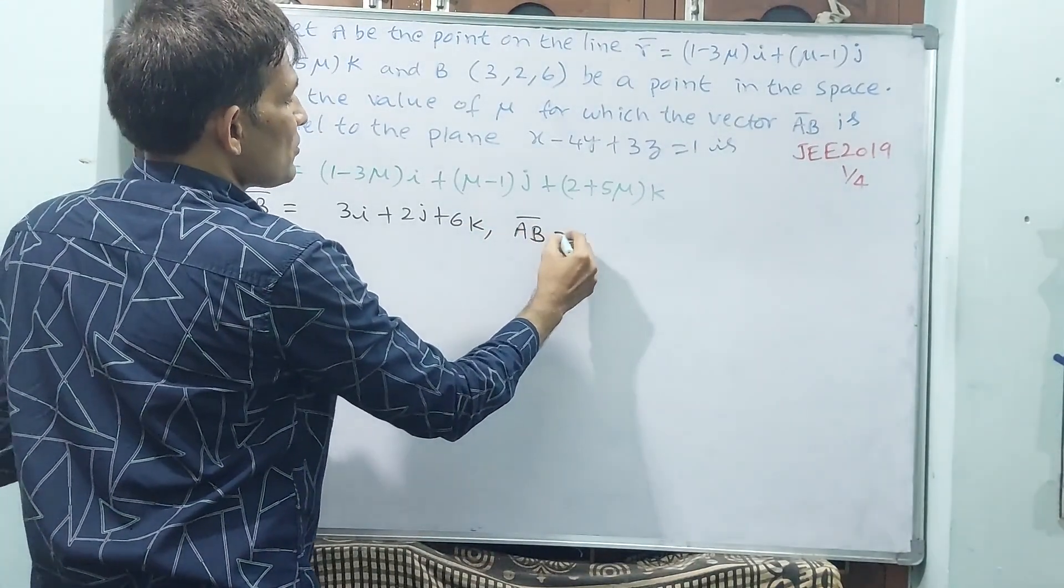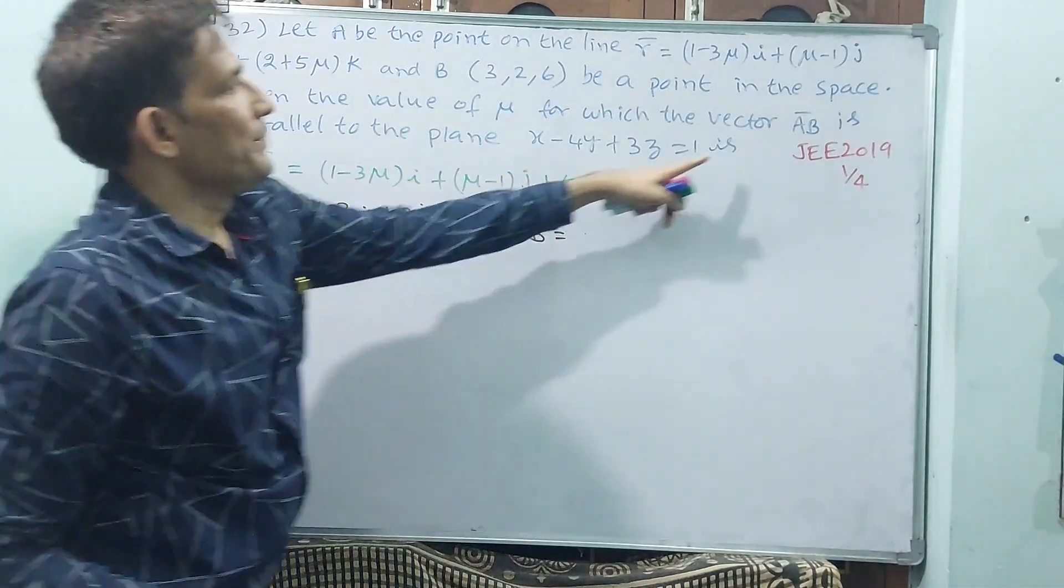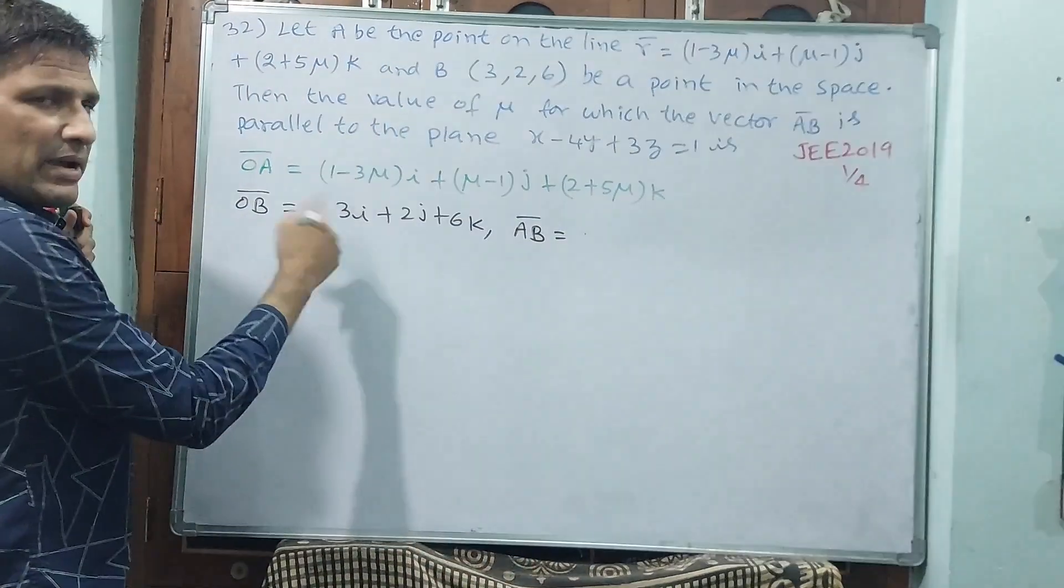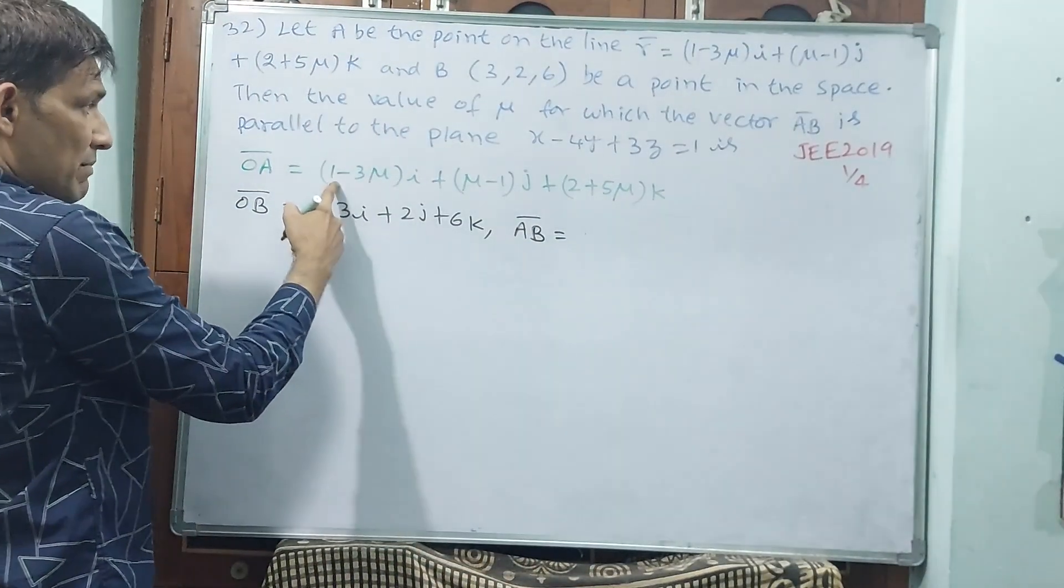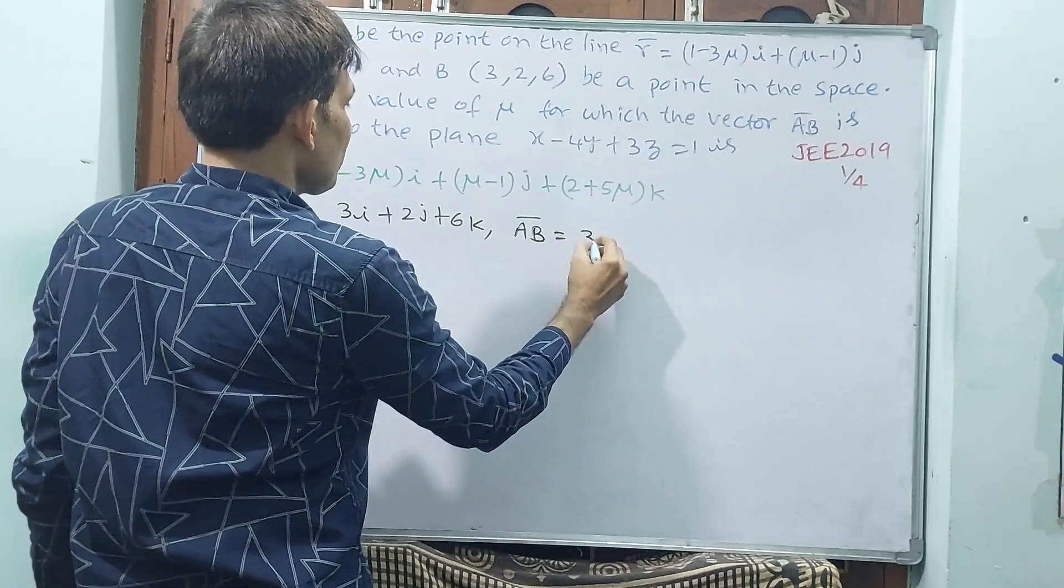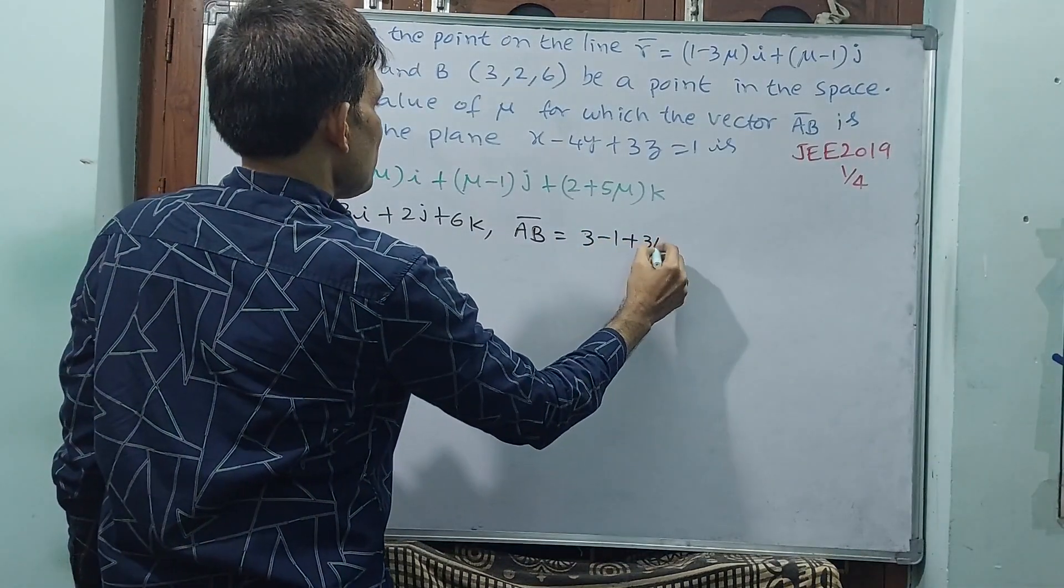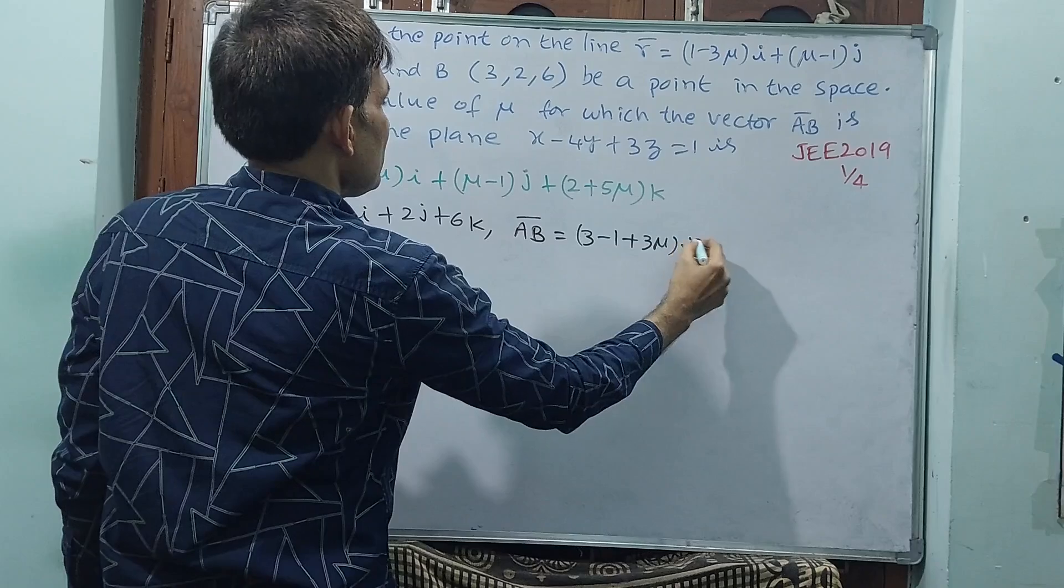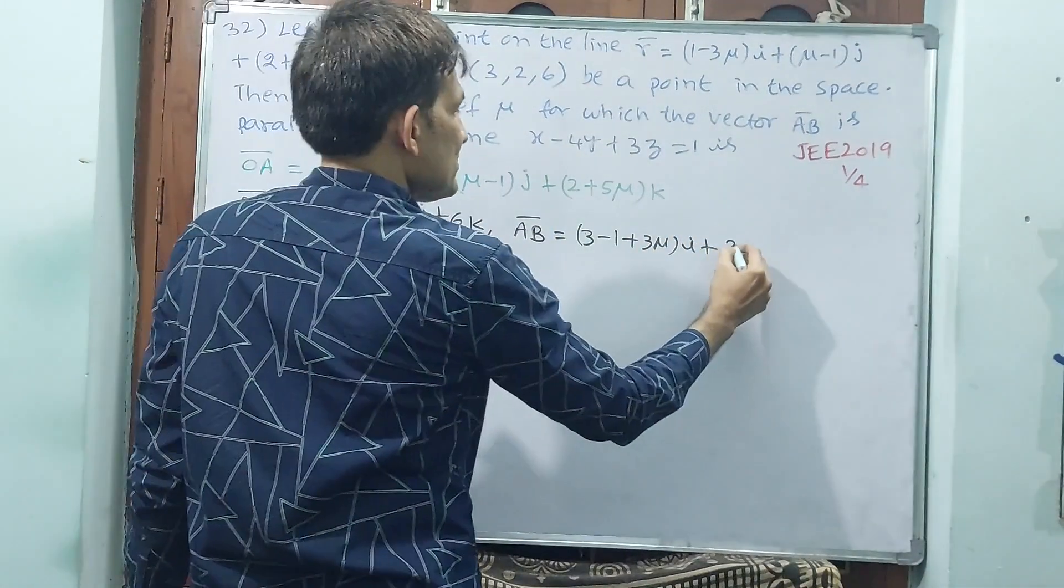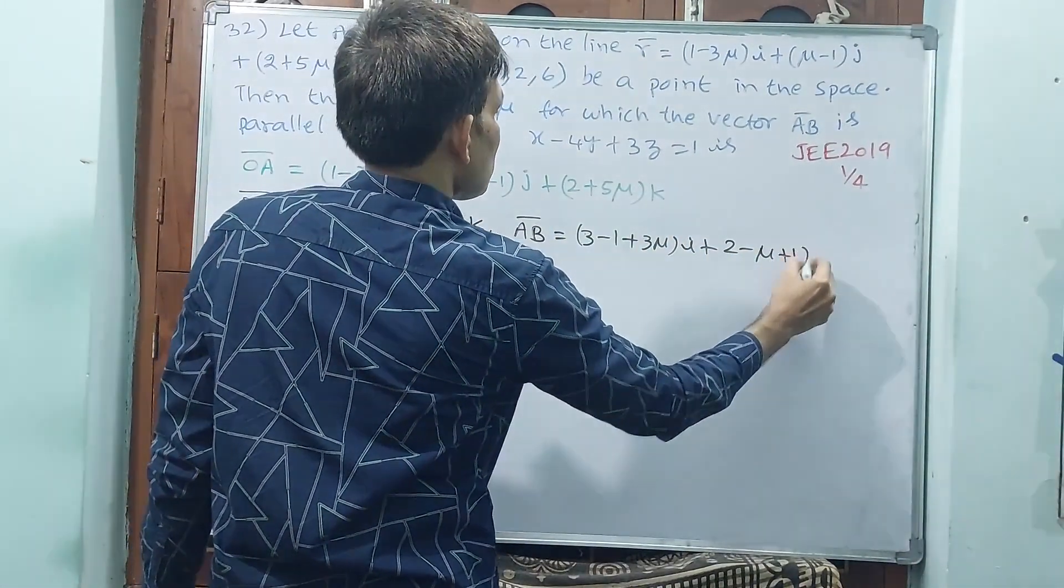Now I will write, sorry, AB. Not position vector AB, vector AB. Why? Because AB you require, vector AB. Vector AB is B minus A, means (3 minus 1 plus 3μ)i plus (2 minus μ plus 1)j.